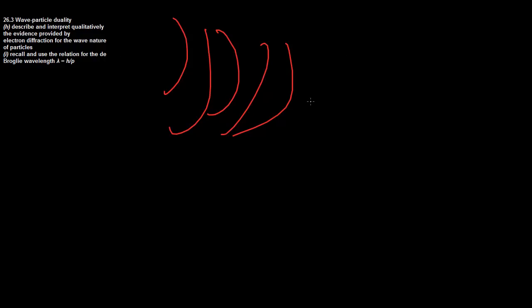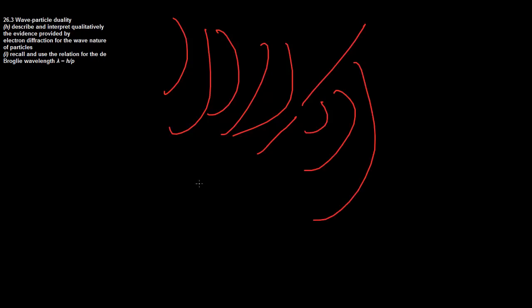We know that these waves act in very interesting ways. If you put a slit through them, they start diffracting. And if you put two slits, they will start interfering with each other.